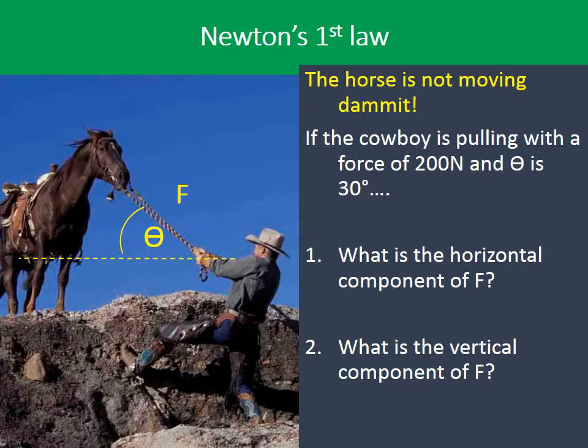This problem we've got a cowboy pulling on a rope trying to move a horse, but the horse is not moving dammit! And the force he's pulling with is 200 newtons at an angle of 30 degrees. You've got to work out the horizontal and the vertical component.